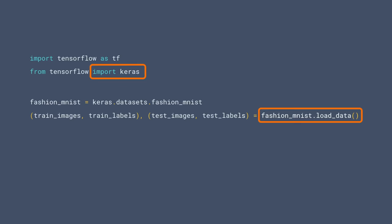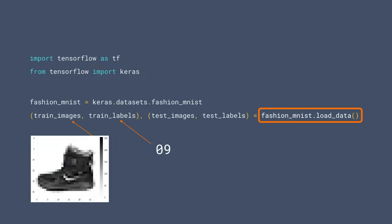The training images is a set of 60,000 images, like our ankle boot here. The other 10,000 are a test set that we can use to check to see how well our neural network performs — we'll see them later. The label is a number indicating the class of that type of clothing. So in this case, the number nine indicates an ankle boot. Why do you think it would be a number, and not just the text 'ankle boot'?